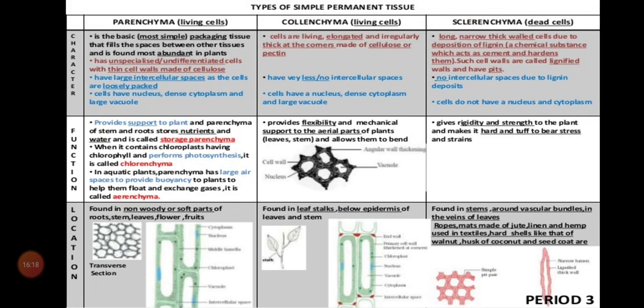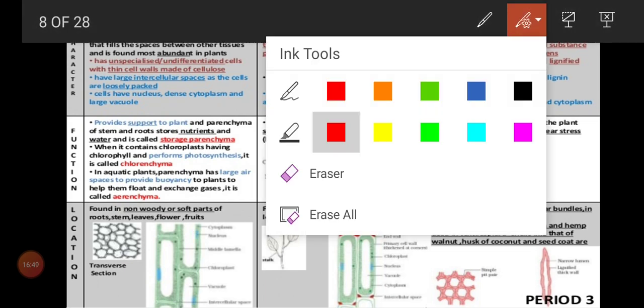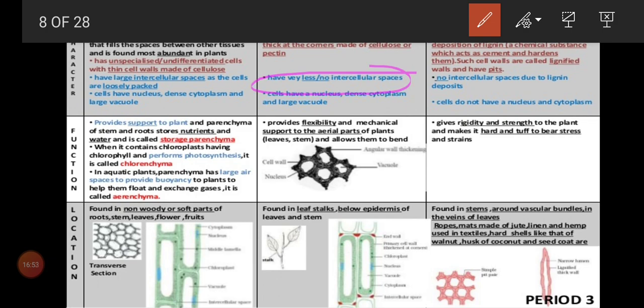Next we will move on to collenchyma. That is also a simple permanent tissue and also a living cell. Most characteristics it shares with parenchyma — cell wall made of cellulose, nucleus present, dense nucleus, and large vacuoles are present. The only difference between parenchyma and collenchyma is that in parenchyma more air spaces are present between the tissues, but in collenchyma there are no intercellular spaces or very less intercellular spaces. That is the very important point. The remaining characteristics are the same as parenchyma.